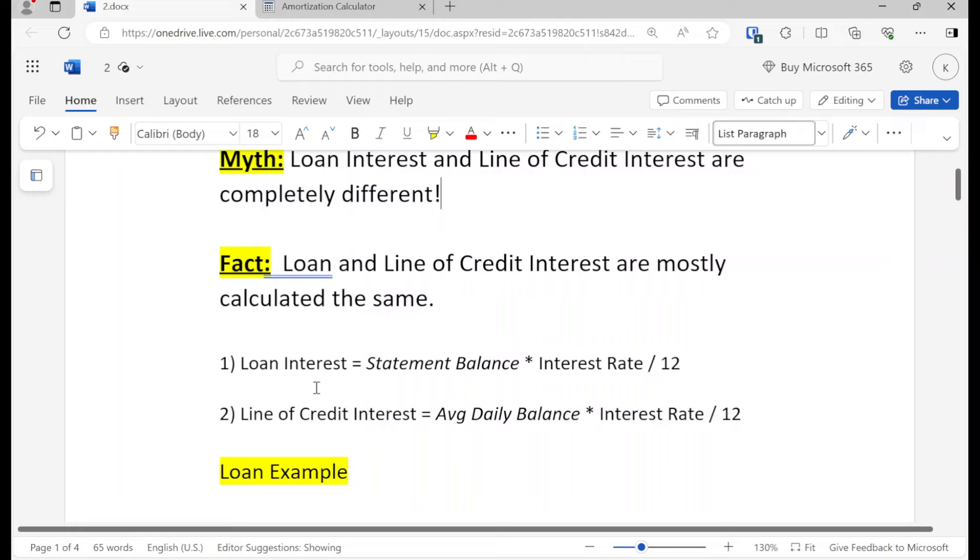So the formula that we're going to go over, and we'll actually do some real life calculations: loan interest is the statement balance times the interest rate divided by 12. And the interest rate is the annual interest rate APR.